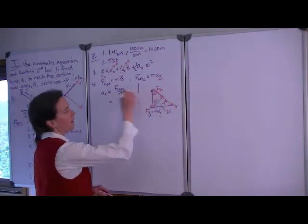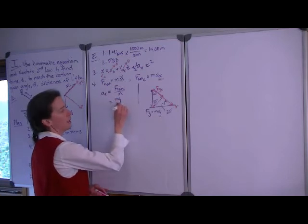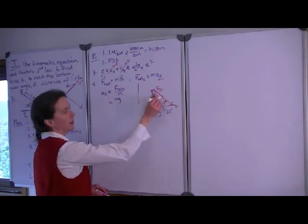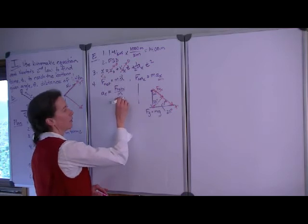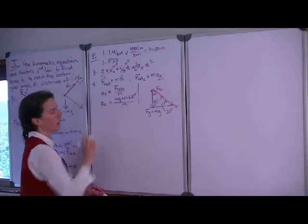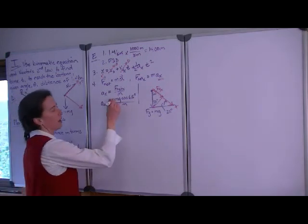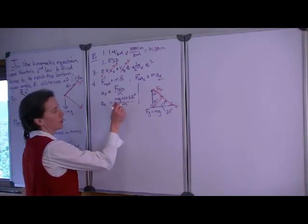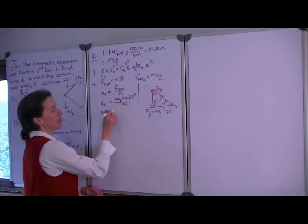This is the fg x, then, is equal to the mg times the cosine of 65 degrees. Why cosine? Because this component is adjacent to that angle over the mass. Now we see that by leaving things symbolically, we've actually made things a little easier for ourselves because mass in the numerator and the denominator cancel.